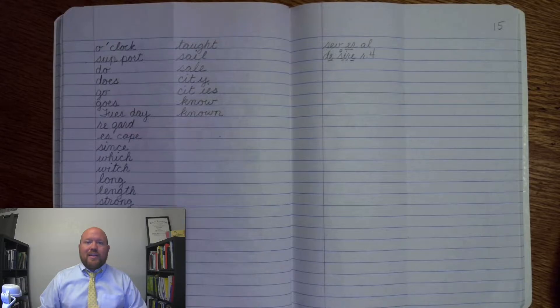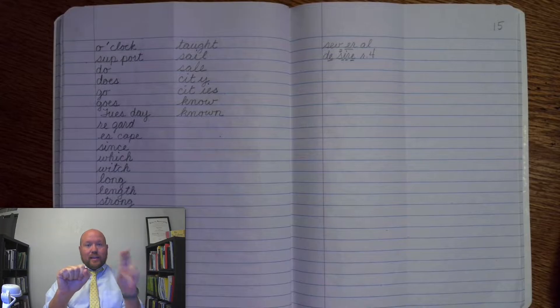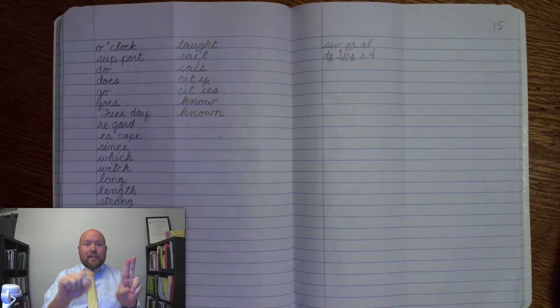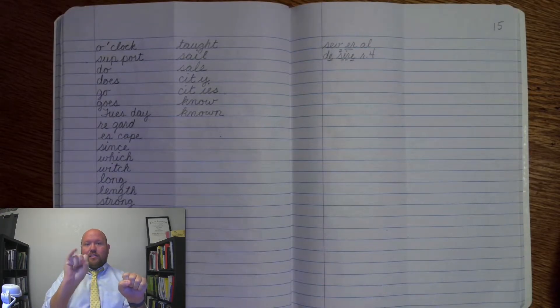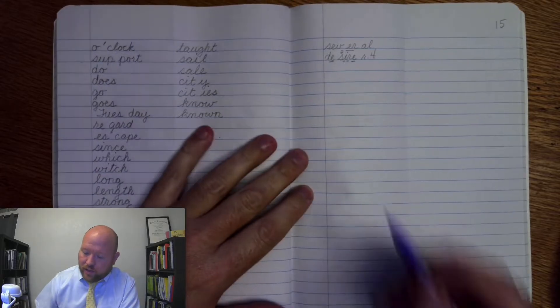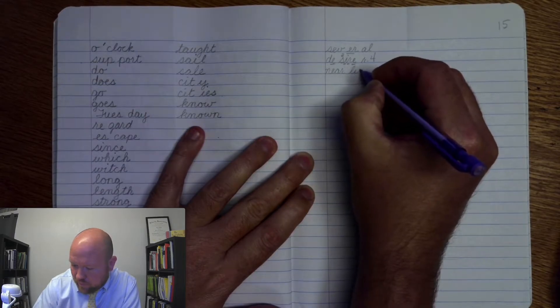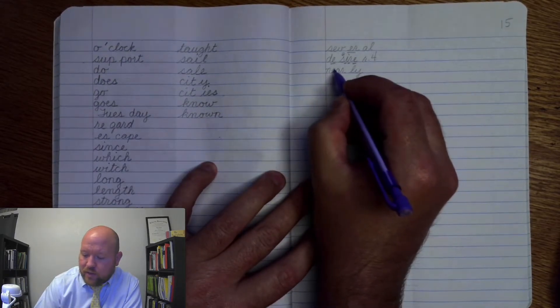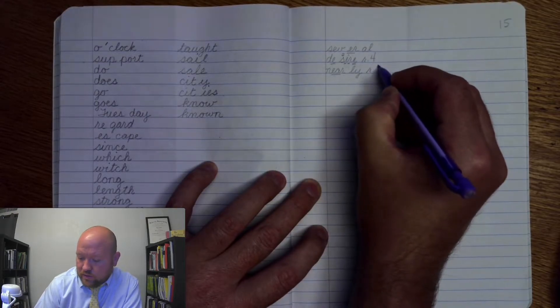Next, we have the word nearly. Nearly. Base word near, ending ly. So nearly is something that's about to happen, right? It's near in time. So near-ly. N-e-a-r-l-y. Nearly. Here we're using the e-a. Markings: N-e-a-r, once, l-y, rule six.